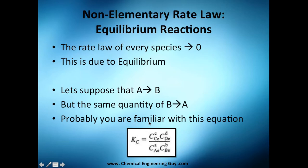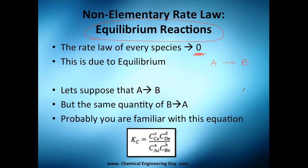Another special topic is when we have a non-elementary rate law in an equilibrium reaction. The rate law of every species, by definition, is zero at equilibrium. Why zero? Because A turns into species B, and at the same time B transforms into C. So you are transforming one species, but at the same time another is disappearing, so the net or overall change is zero — that's why the reaction rate is zero.